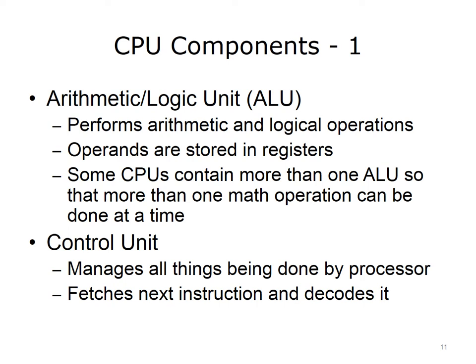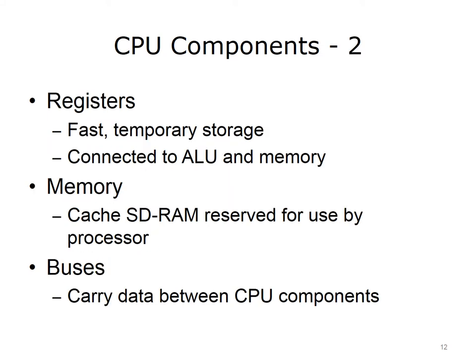The Control Unit manages all the things the processor does. It fetches the next instruction and then decodes it so that the CPU can operate on that instruction. Registers store the operands used by the ALU. Registers are fast, temporary storage, connected to the ALU and to CPU memory. Computer programmers, specifically those who study assembly language programming, learn how to store values in these registers, how to retrieve them, and how to operate on them using values in other registers. Another CPU component is its memory, called cache. Finally, the CPU contains buses. Buses are used to carry data between CPU components.